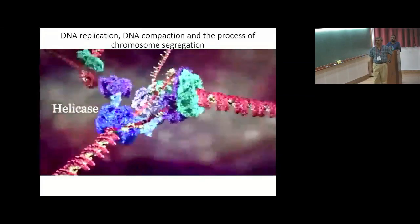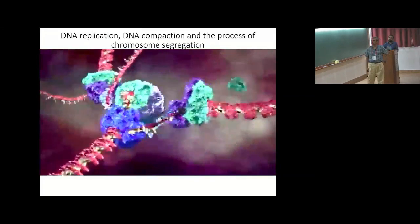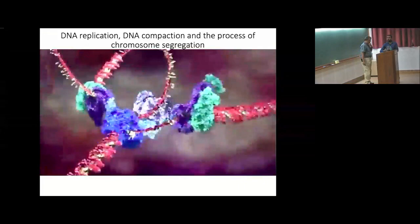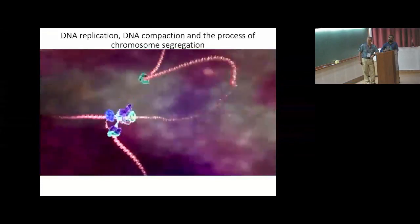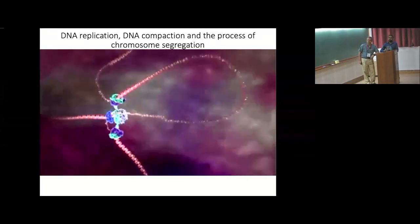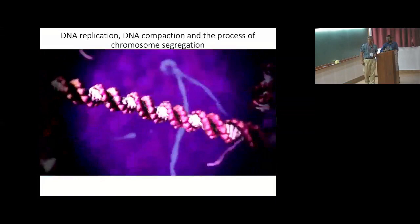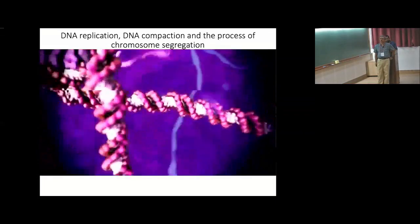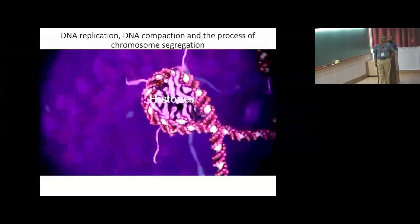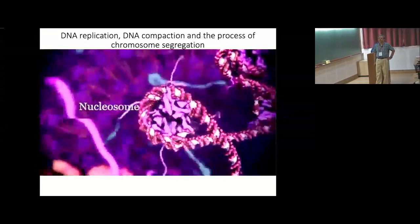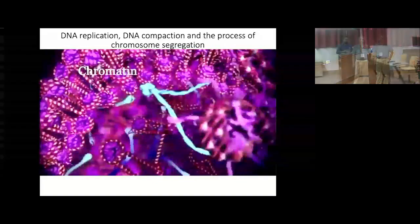Helicase literally spins as fast as a jet engine, unwinding and separating the two strands. The strand on the right has its complementary strand assembled continuously, but the other strand is more complicated because it runs in the opposite direction, so it must be looped out with its complementary strand assembled in reverse, section by section. At the end you have two identical DNA molecules, each a few centimeters long but just a couple nanometers wide. To prevent tangling, the DNA is wrapped around proteins called histones, forming a nucleosome, bundled into chromatin, and further coiled to form a chromosome.